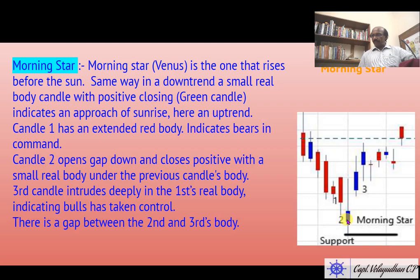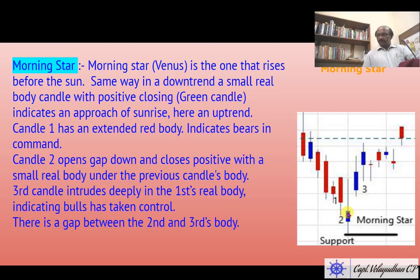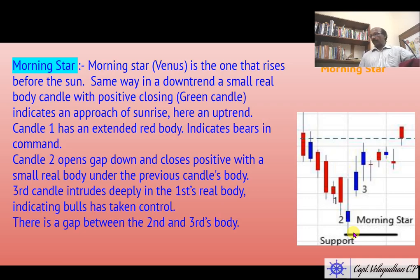The next day the market gapped down again — bears were strong here — and pulled the market down. But somehow the bulls tried to pull back and took control, pulling the market up, then it came down and closed. So this is a bullish candle. We call that a morning star, indicating a trend change — the sunrise is going to take place. The next day, if you see the price gapped up again with a big gap and price moved up, this bottom became the support for the morning star. The trend only reversed here.